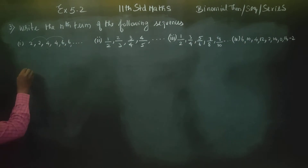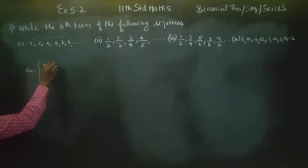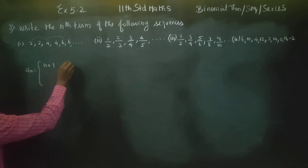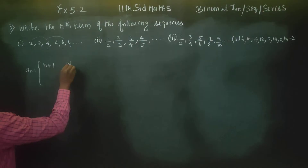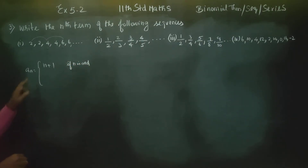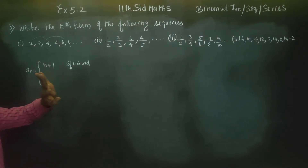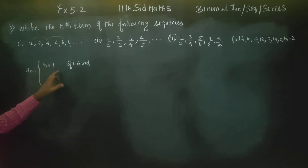So what do you do? An is equal to n plus 1 when n is odd. If we substitute 1, then 1 plus 1 is 2. If we substitute 3, then 3 plus 1 is 4. If we substitute 5, then 5 plus 1 is 6. So odd numbers will match exactly.